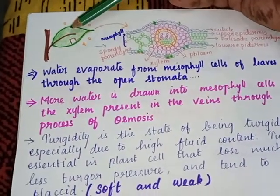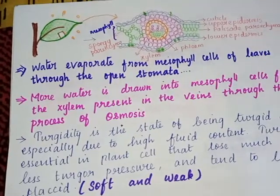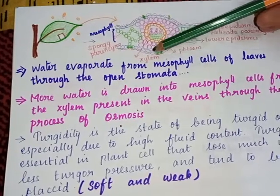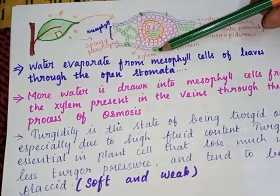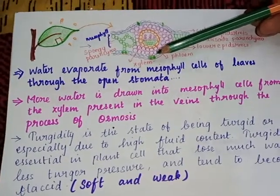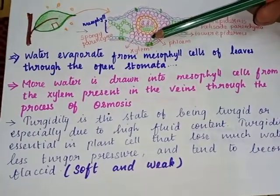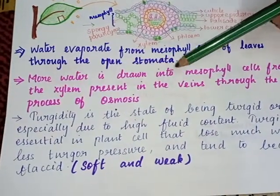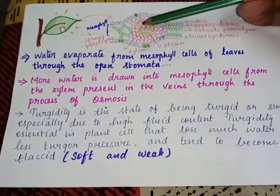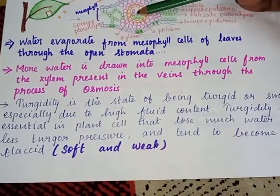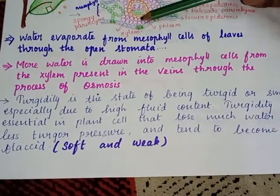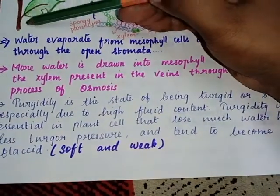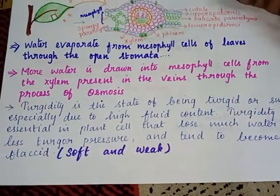Water evaporates from the mesophyll cell of the leaf through the open stomata. When the guard cell absorbs more water, it becomes turgid and stomata will be opened — that is when evaporation occurs. More water is drawn into the mesophyll cell from the xylem present in the veins through the process of osmosis.